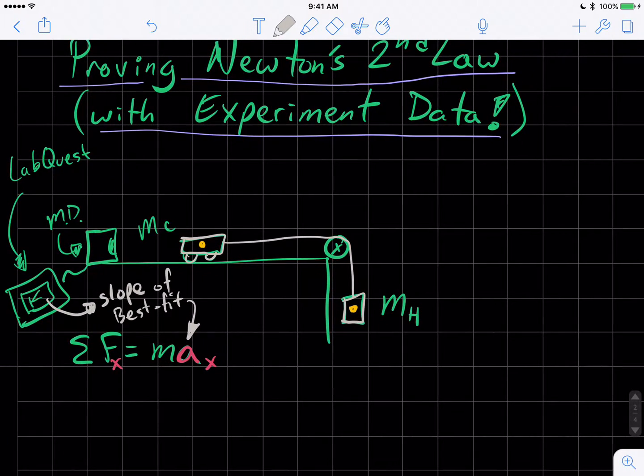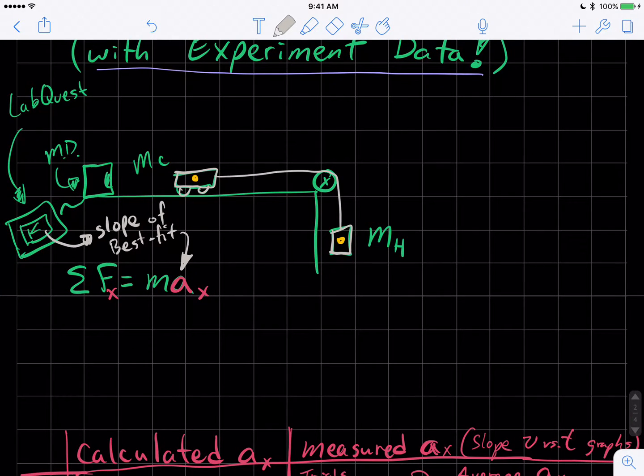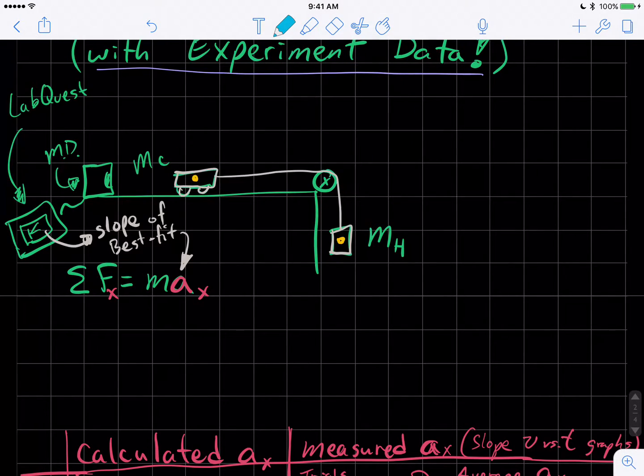We have to kind of modify. We're looking at Sigma FX equals MAX. And what is the X? That's the horizontal dimension. But that looks a little differently when you're bending things over a pulley. So our X and Y axes kind of look like this. So we have an X axis that gets bent over the pulley and then a Y axis that would be up and down for the MC.